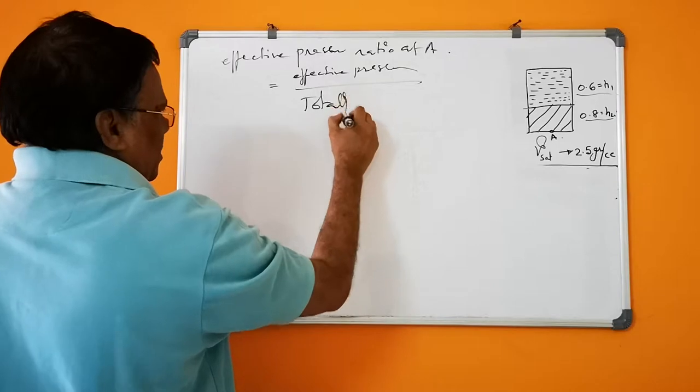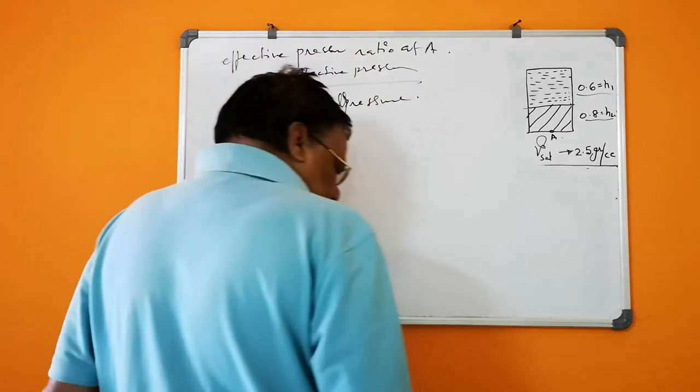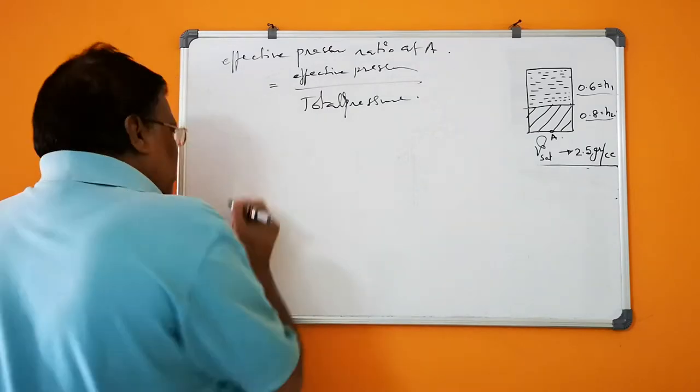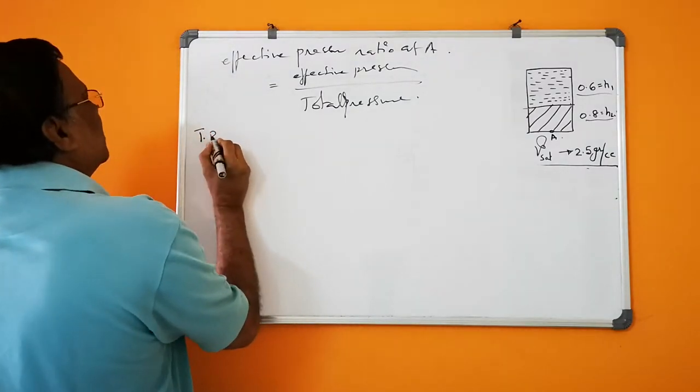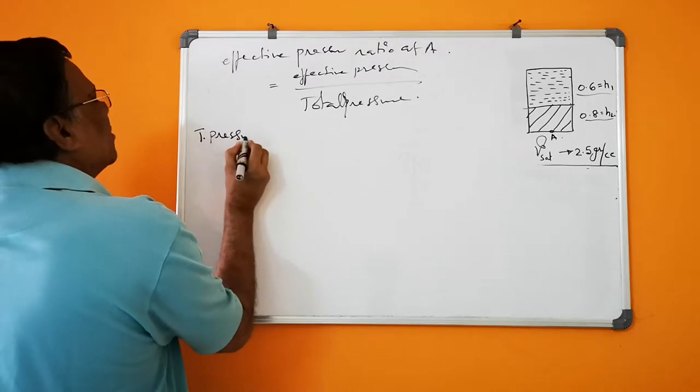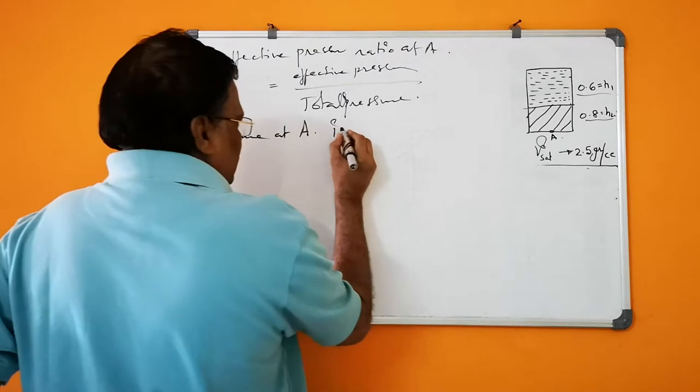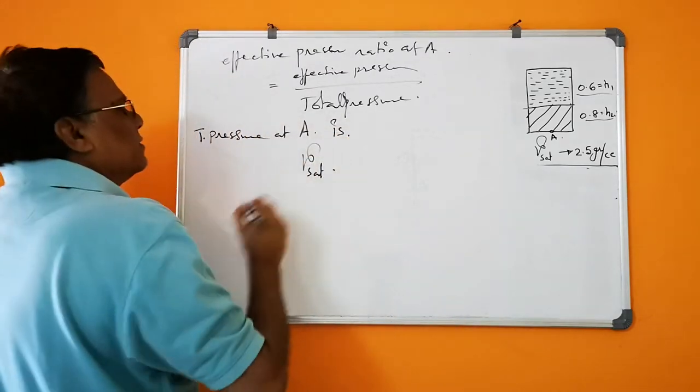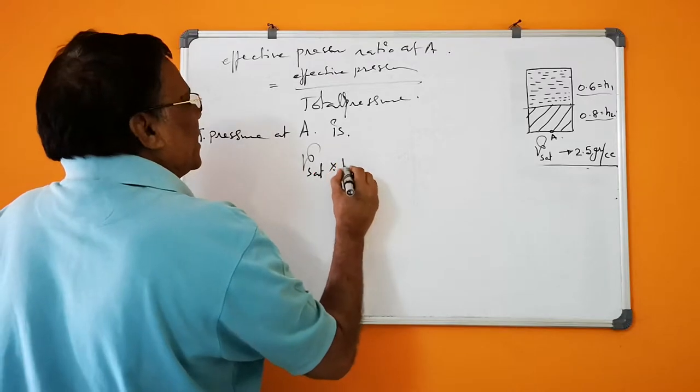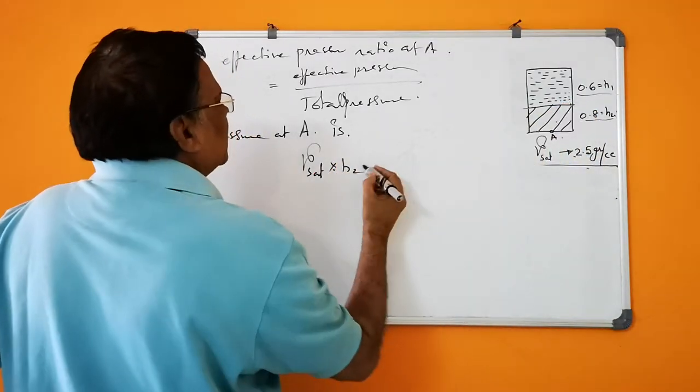So the total pressure at A is gamma sat multiplied by H2 plus gamma W times H1.